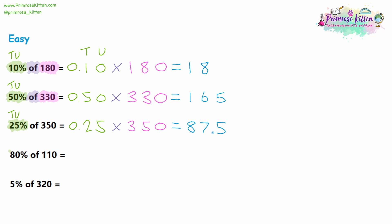Moving on to question four, we're starting off with 80%. That is eight tens and zero units. So in my decimal I'm gonna have eight tenths and zero hundredths. We will be multiplying, and we've got 110. So if you type into your calculator 0.80 multiplied by 110, then your answer is going to be 88.